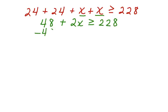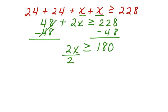Now we can subtract 48 from both sides. These cancel. Bring down the 2x. 2x is greater than or equal to 180. Divide both sides by 2. x is greater than or equal to 90 feet.